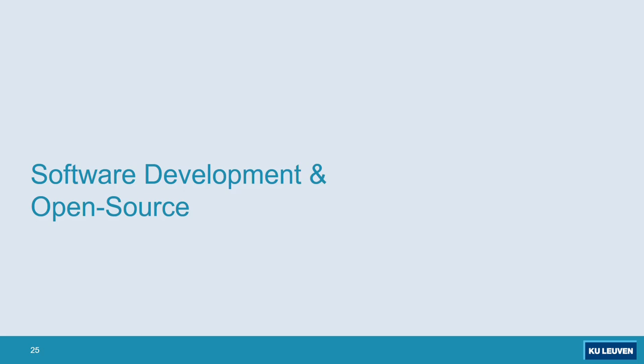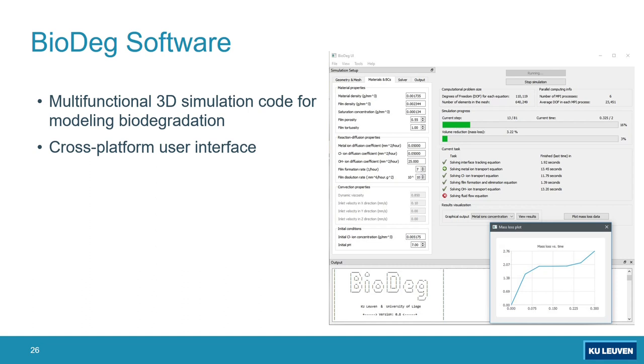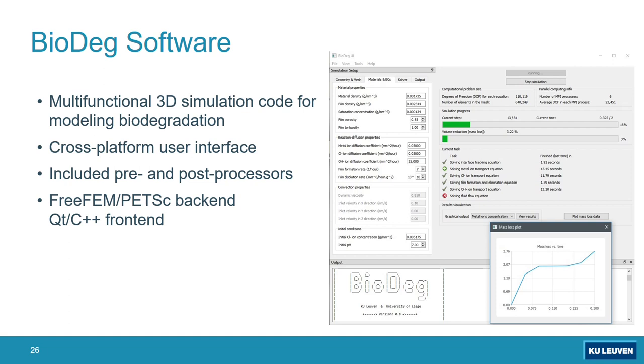A few slides on the output of this project: all these models, including fluid flow models and tissue growth, are now fully assembled into a multifunctional 3D simulation code for biodegradation. We call it BioDeg and it's available with a cross-platform user interface. The software includes a preprocessor and post-processor, a very basic one, and has a FreeFEM and PETSc backend and C++ and Qt front-end. It is available as an open source tool that everyone can grab and install and run on any operating system. You can have the simulation on your desired implants or scaffold shapes in 3D.